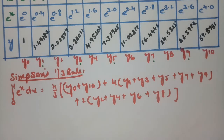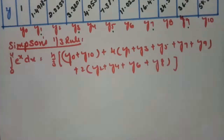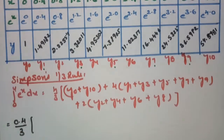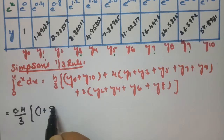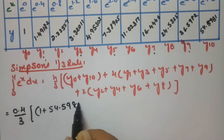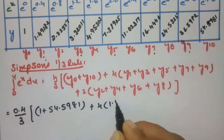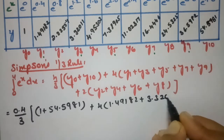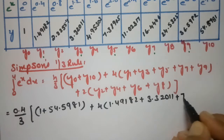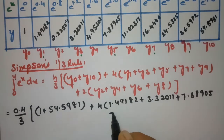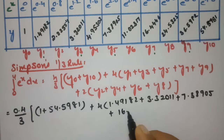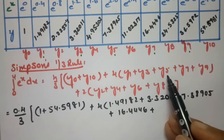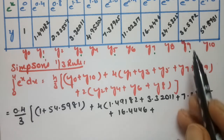Total we have 11 ordinates, and h is 0.4. Substituting all values: 0.4 divided by 3, times the first value 1 plus the last value 54.5981, plus 4 times of y1=1.49182, y3=3.32011, y5=7.38905, y7=16.4446, and y9=36.5982.